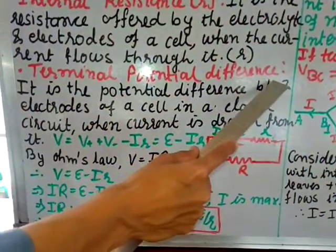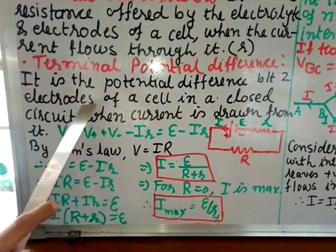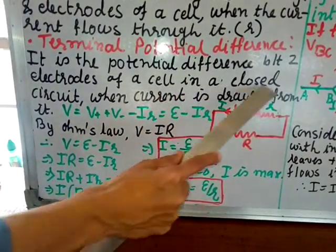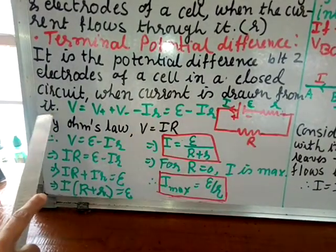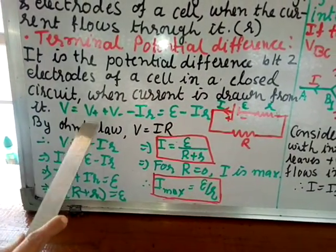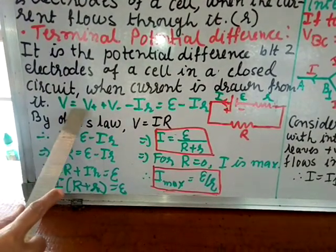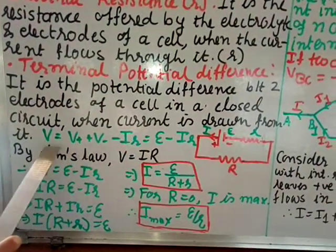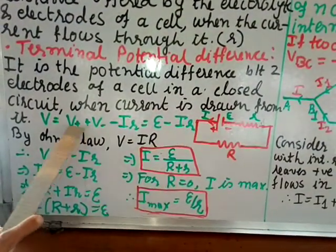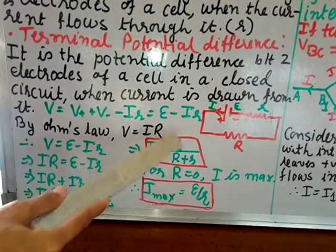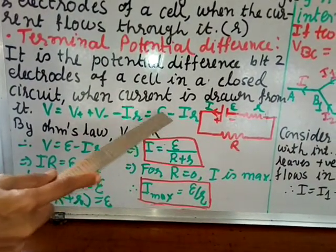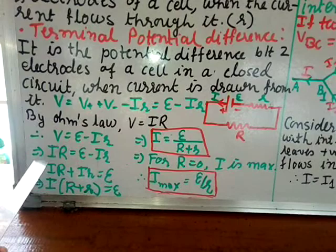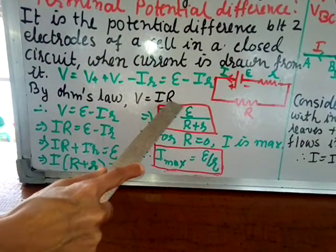Terminal potential difference is the potential difference between the two electrodes of a cell in a closed circuit when current is drawn from it. The formula is V = E − ir, where E is EMF, i is current, and r is internal resistance. If the internal resistance is very small, then E and V are almost the same. By Ohm's law, V = iR.